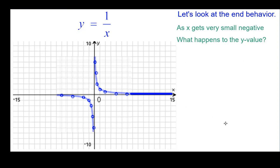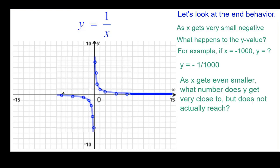So again, for example, if x was negative a thousand, y would be negative a thousandth. And so we would go way out there and negative a thousandth. And as it gets even smaller in that negative direction, what does y get really close to but does not actually reach?